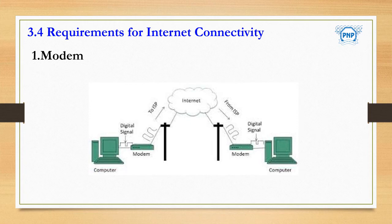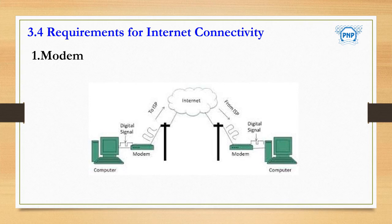In simple words, a modem can be called a translator for your PC. The computer only understands binary code — the language of 0s and 1s. Binary code signals are digital signals, but digital signals cannot be transmitted through a telephone line because a telephone line transmits only analog signals. So if you want to communicate with another computer on the internet, you need a device that converts the digital signals emitting from your PC.